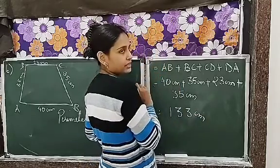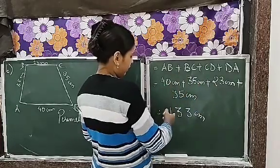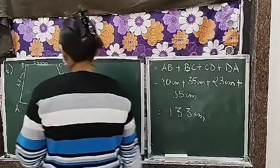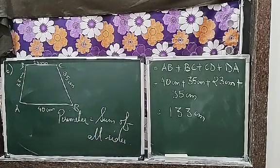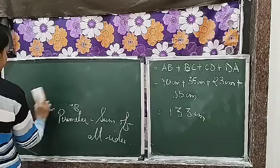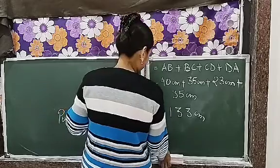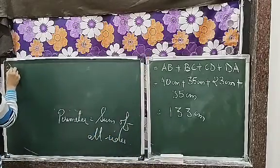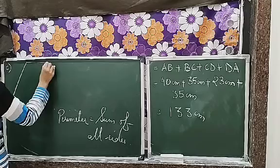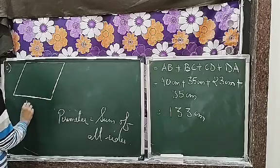We will tell you 35 plus 35 is 70, 70 plus 40, 7 plus 4 is 11, so 110 plus 23 will give you 133 cm. Okay, so this completes the B part. Now we will start the C part.